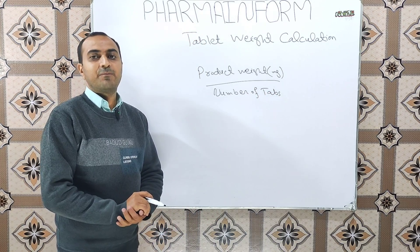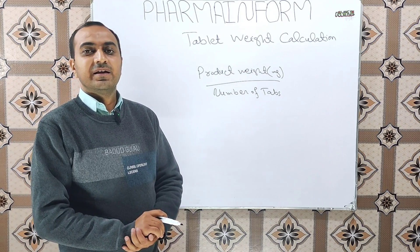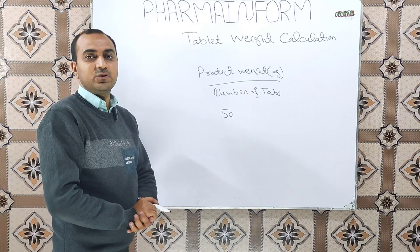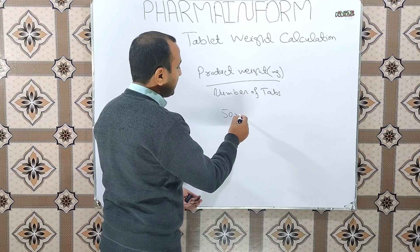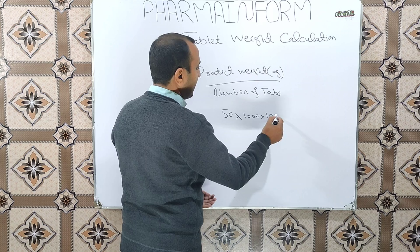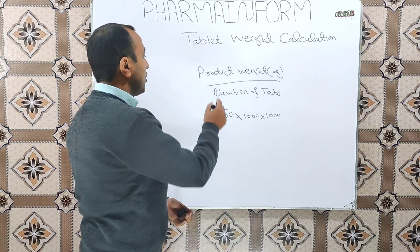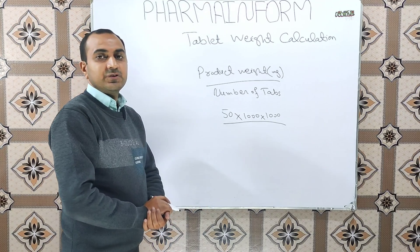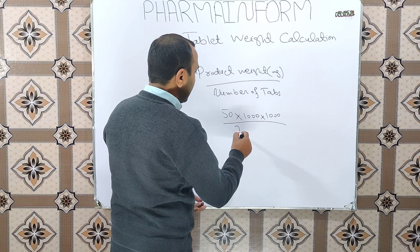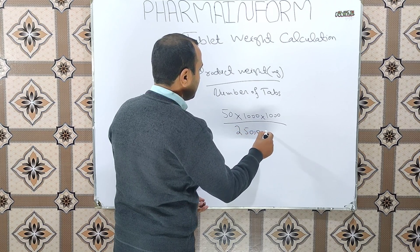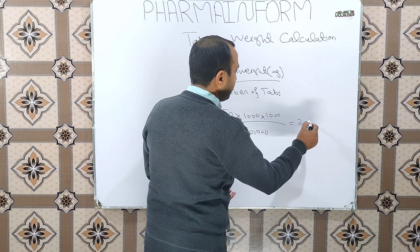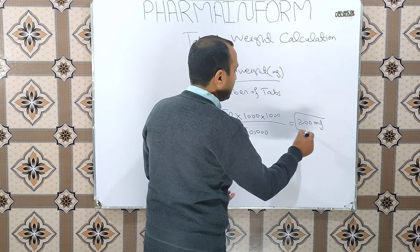Suppose we have a batch size of 50 kg. As we discussed, we will convert it to milligrams — first multiply by 1000 to get grams, then multiply again to get milligrams. We then divide by the number of tablets. Suppose our batch size in terms of number of tablets is 250,000 tablets.